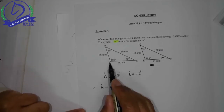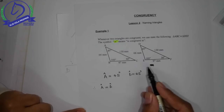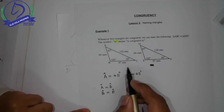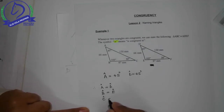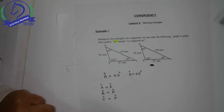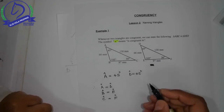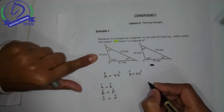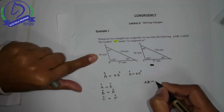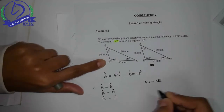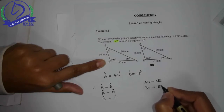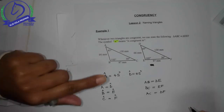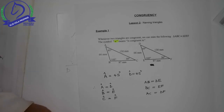Then we can say that angle B is equal to angle E because both of them are 105 degrees. And then we have the third angle, angle C, and angle C is equal to angle F. Now let's list which sides are equal to each other. AB is 66, DE is 66, so AB is equal to DE. BC is equal to EF, and AC is equal to DF. In geometry we try to write or arrange the variables in alphabetical order.